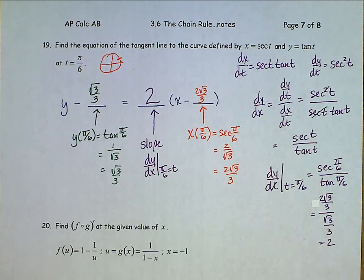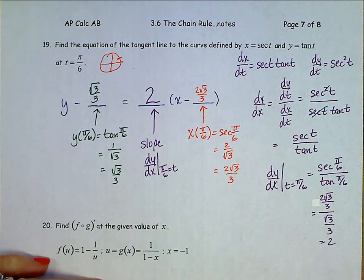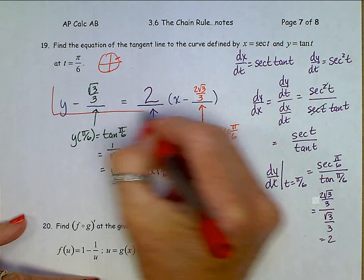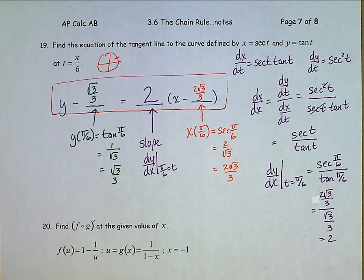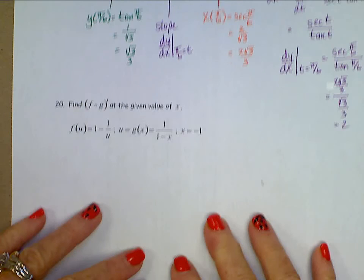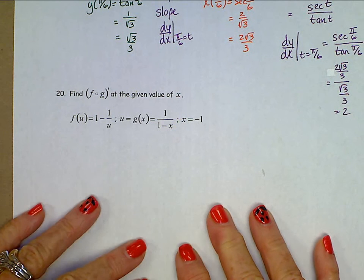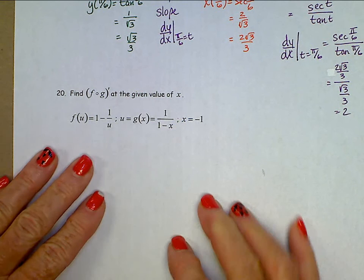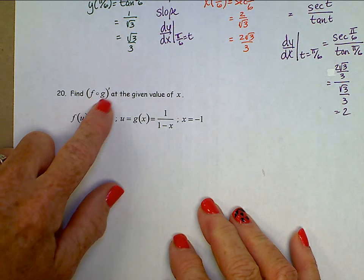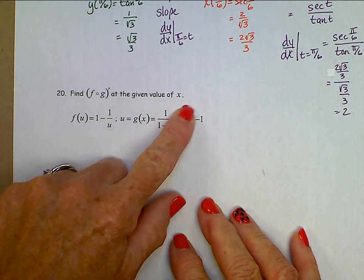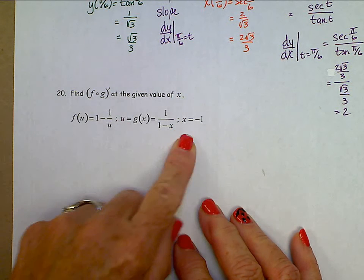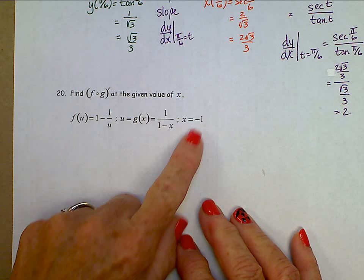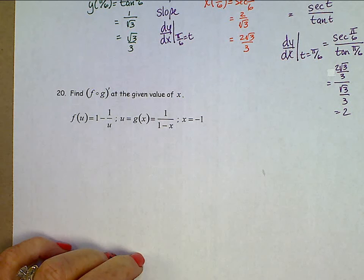There's that tangent line. Now let's look at this one. f composition g prime at the given value of x. So we have this function f of u and this function g of x, and we want to find the composition's derivative at x is negative 1.